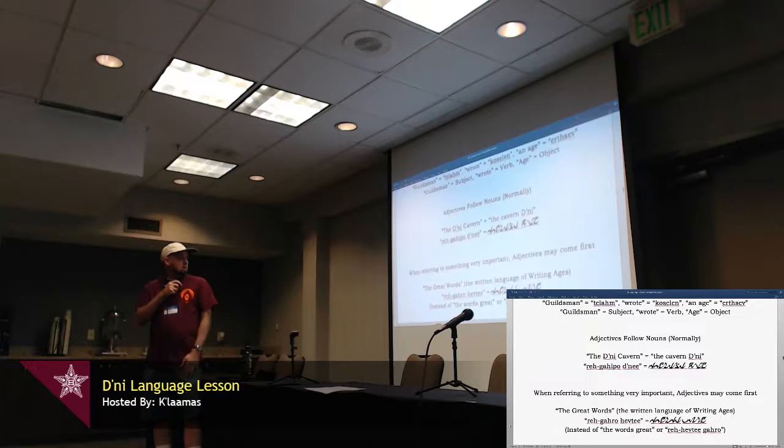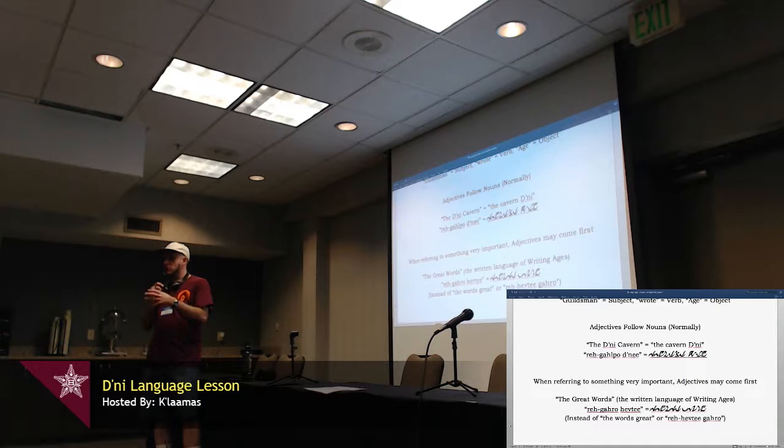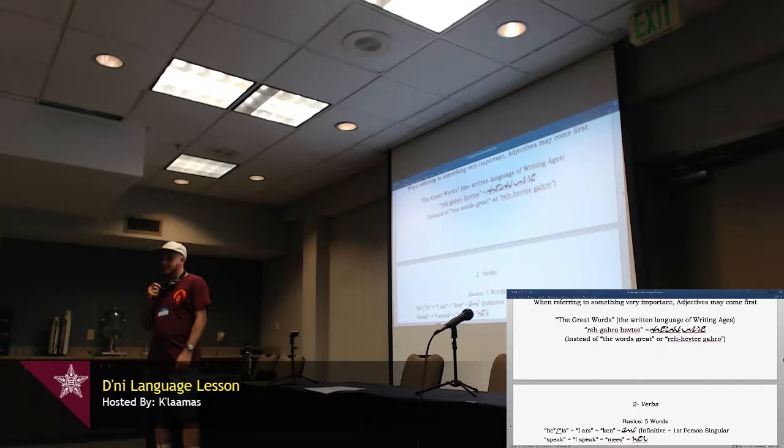Unlike English, adjectives usually follow nouns. Like we, in English, we say the big dog. In D'ni, it would be the dog big. A lot of languages are like that. So, the D'ni Cavern, or the Cavern D'ni, Regahpo D'ni. But, with some things that are very important, adjectives come first, like, regahro heftee, means the great words. With normal D'ni grammar, it would be, the words great, re, heftee, garo, but important things, you put the adjective first. I'm not sure why. If that's the way it is. Languages always have exceptions.